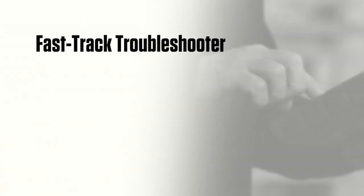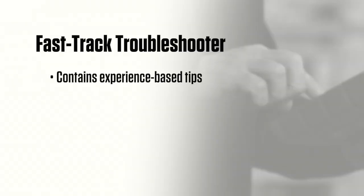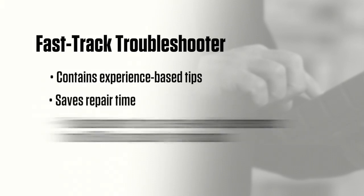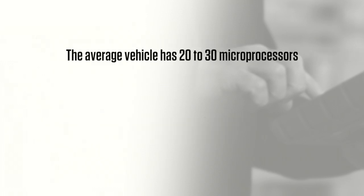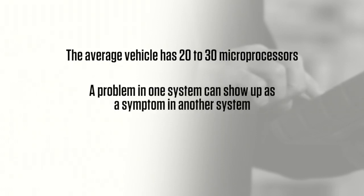The Snap-on Fast-Track Troubleshooter contains experience-based tips designed to show the likely diagnosis for a specific vehicle and to save repair time. Troubleshooter tips are real-world experiences from OEM and specialty technicians. According to the Society of Automotive Engineers, the average vehicle has 20 to 30 microprocessors. Each one monitors one or more interdependent systems and subsystems — a problem at one can show up as a symptom in another system.